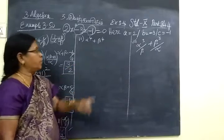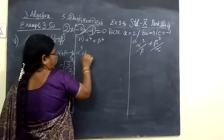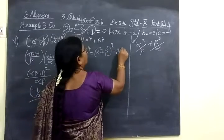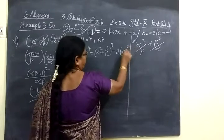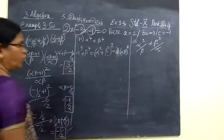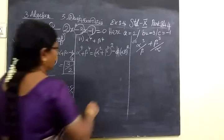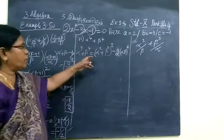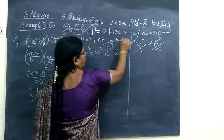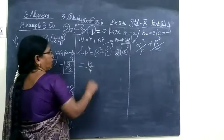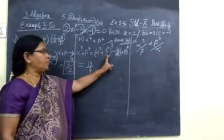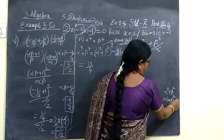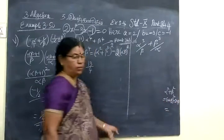Now alpha to the power 4 plus beta to the power 4. The identity for this is: alpha square plus beta square, whole square, minus 2 times (alpha beta) whole square. Now to find alpha square plus beta square, use the formula: alpha square plus beta square equals (alpha plus beta) whole square minus 2 alpha beta.